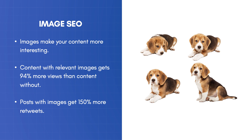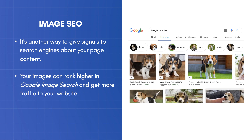Let's look at the most important SEO benefits from using images in your content. First and foremost, they make your content more interesting, and this means visitors are likely to actually read your article. Content with relevant images gets 94% more views than content without. Your readers are more likely to share a page with images on social media, and the shared post has more chances of getting attention than plain text posts. It's another easy way to make your SEO stronger by giving search engines the right signals on what your content is about through image alt text. Your images can also rank higher on Google image search and get more traffic to your website.